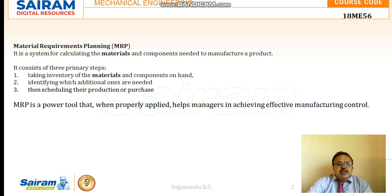The three steps are: considering the materials and components readily available in hand, identifying how many additional materials are needed and procuring those materials, and converting them into the finished product by making them involved in the production process. MRP is a powerful tool.